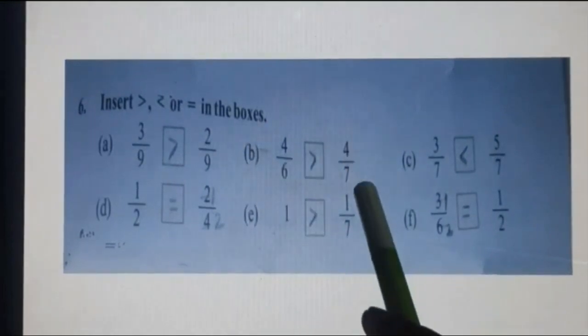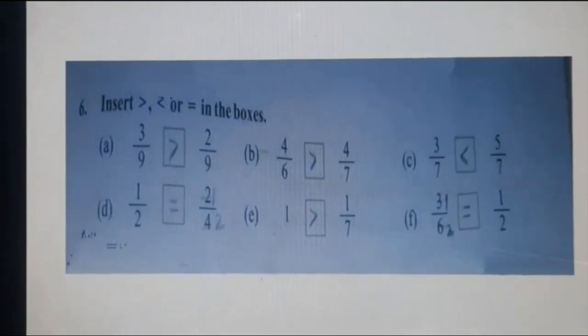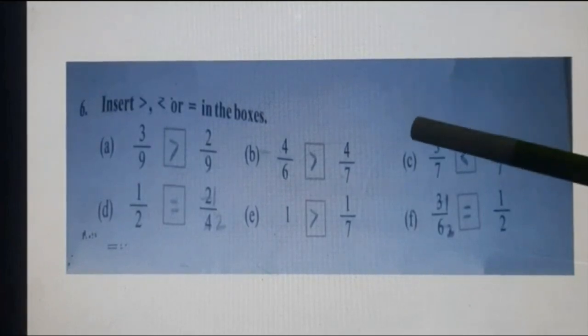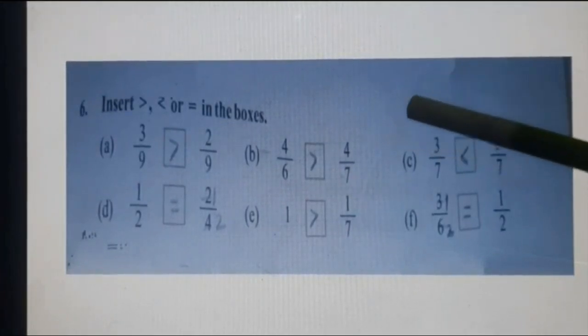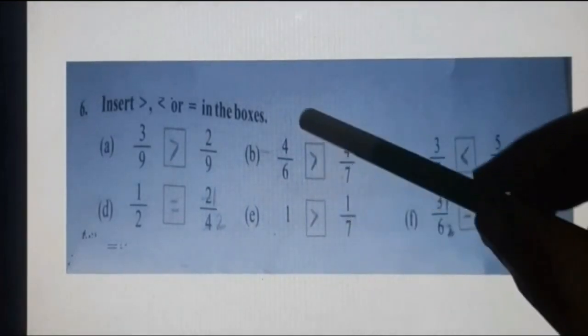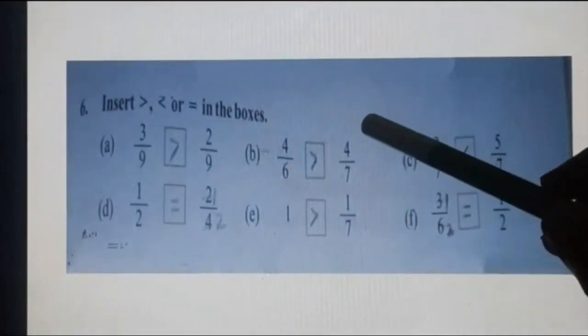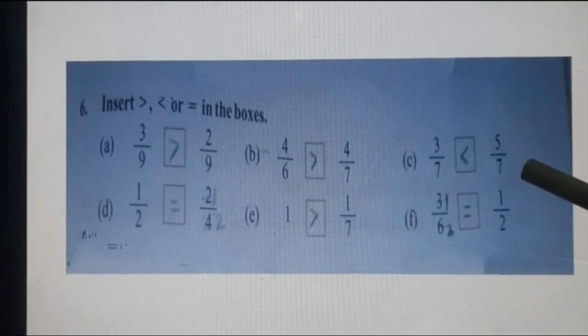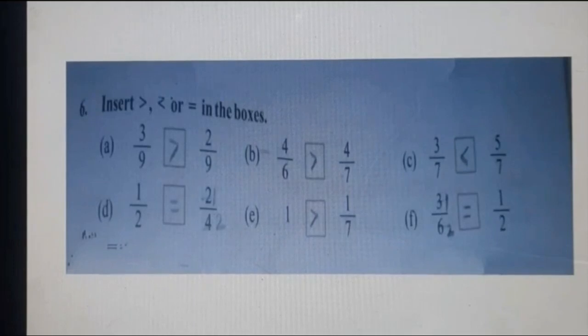Part B: 4 upon 6 vs. 4 upon 7. Numerators are the same, so when numerators are the same, the fraction with the smaller denominator is the greater fraction. So 4 upon 6 is greater than 4 upon 7 because its denominator 6 is the smaller number. Part C: 3 upon 7 vs. 5 upon 7. Denominators are same, so check numerators — greater numerator is greater. So 5 upon 7 is greater.